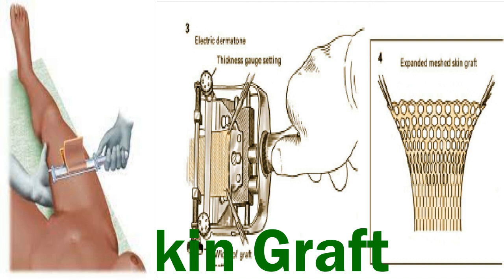A surgical assistant helps keep tension on the donor site. The dermatome should be started prior to making contact with the skin and approached at approximately a 45-degree angle. Once the dermatome has engaged the skin and a couple of centimeters of advancement has occurred, the dermatome should be lowered to approximately a 30-degree angle and advanced until the desired length of skin is obtained. The amount of pressure exerted is important, as too great a pressure may produce a thicker graft than is desired.